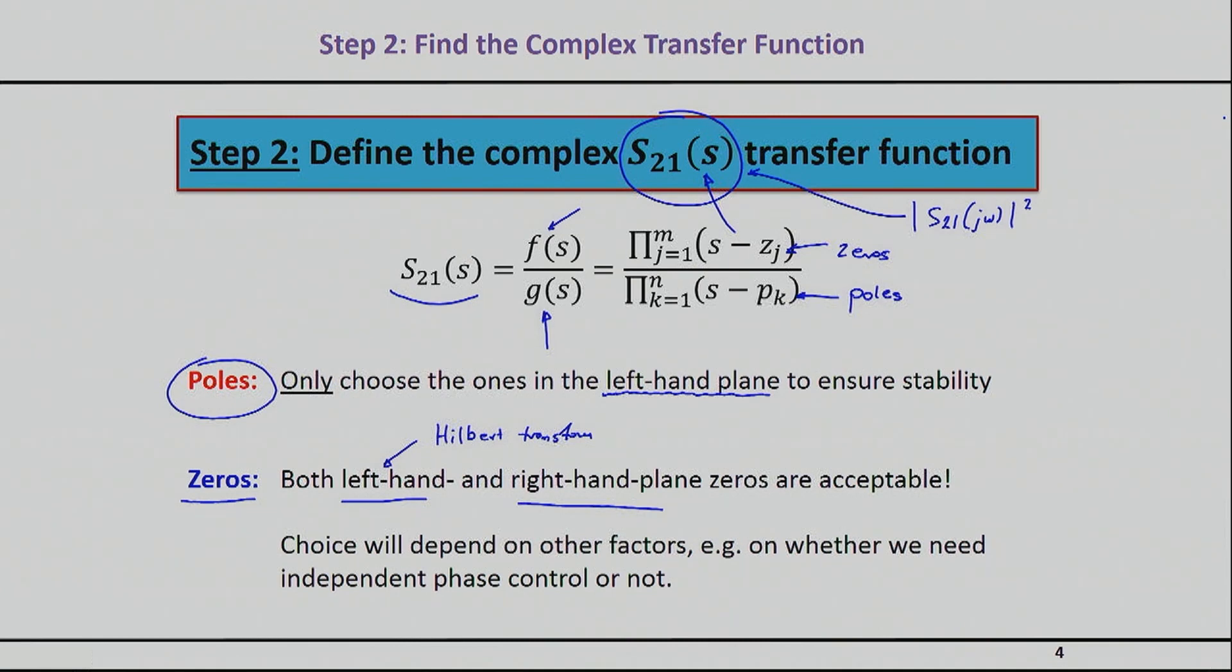The issue is that the left-hand zeros are basically related to filters that have what we call the minimum phase. Essentially what that means is that you have minimal phase from input to the output. From a physical realization perspective, that means there is actually only a single path to go from input to output. So if you have a physical realization that guarantees that the signal can only go from the input port to the output port through a single path, then you basically have a guaranteed minimum phase realization, which means all the zeros are on the left-hand plane.